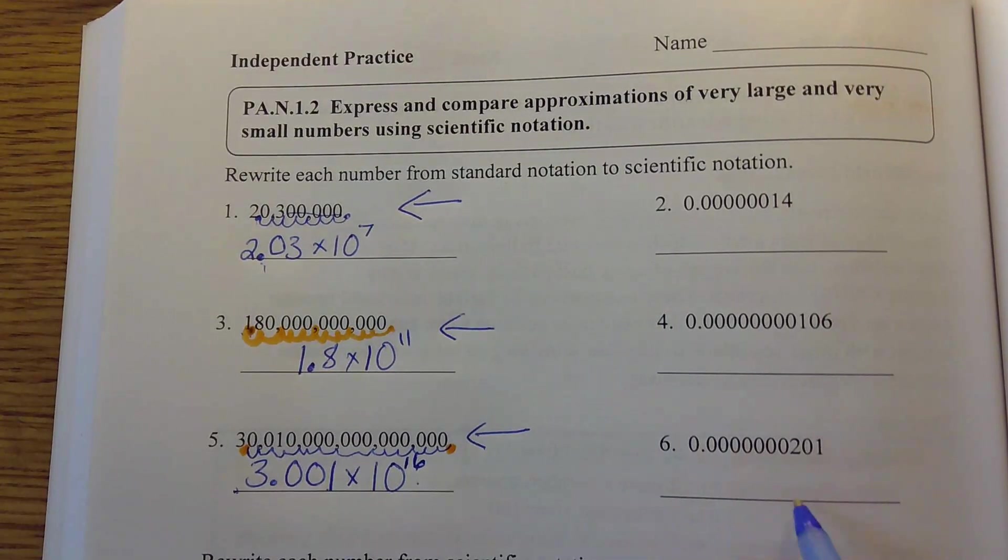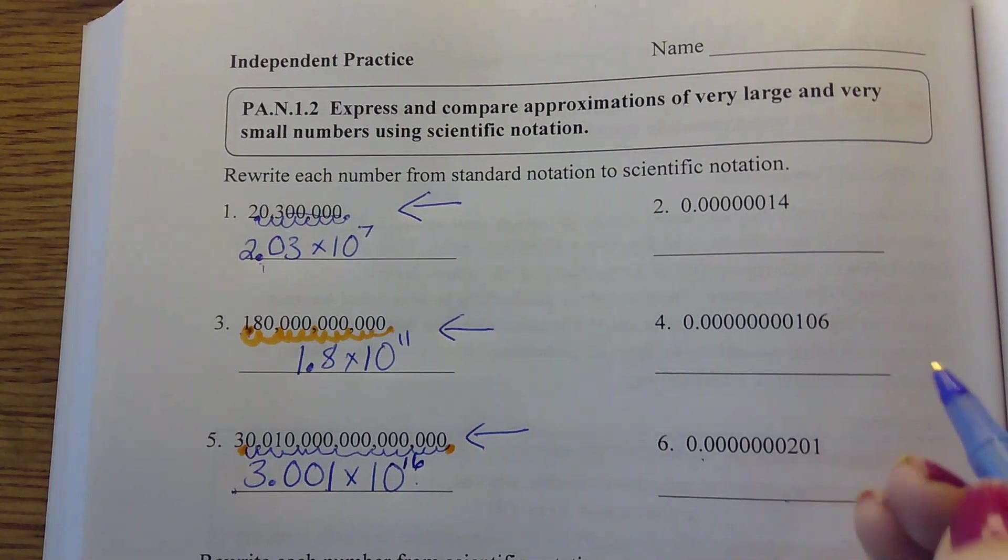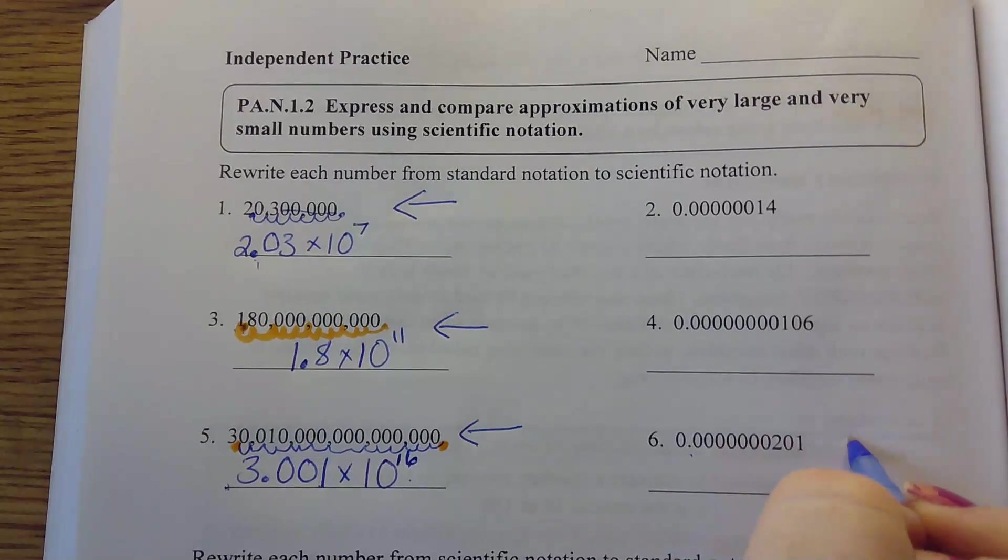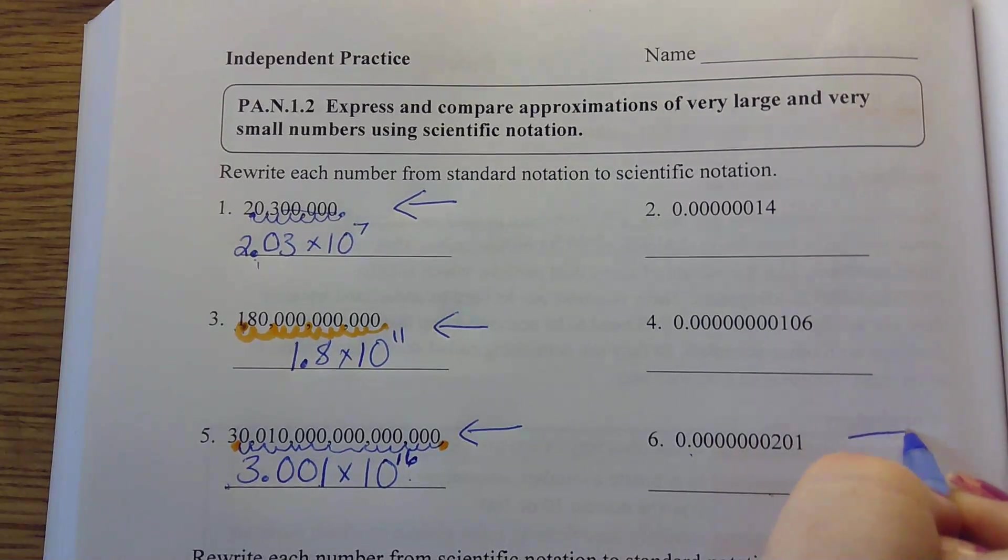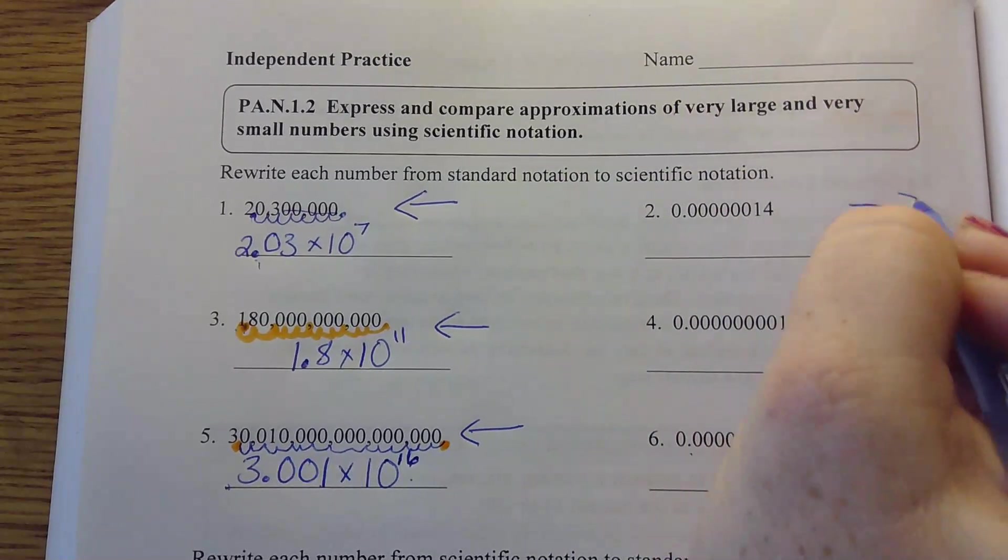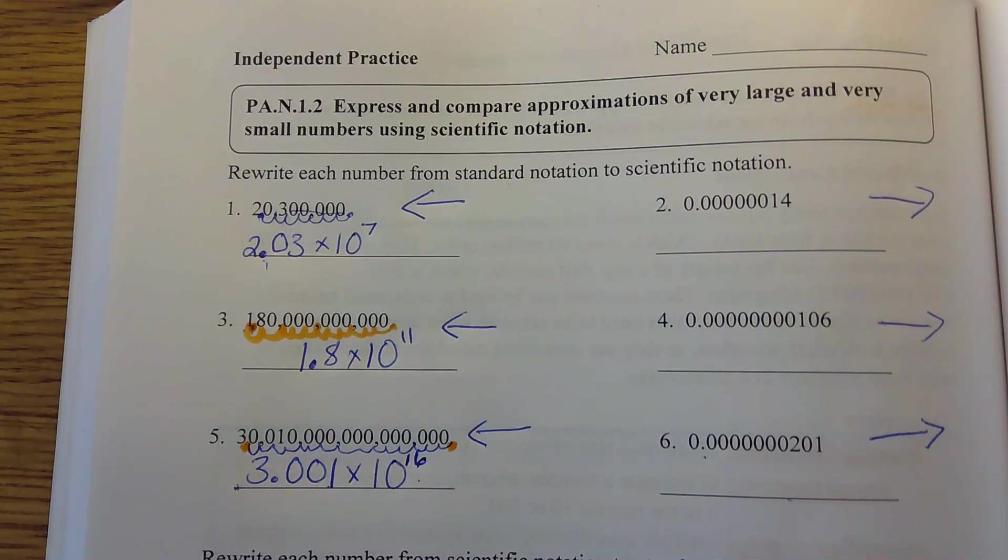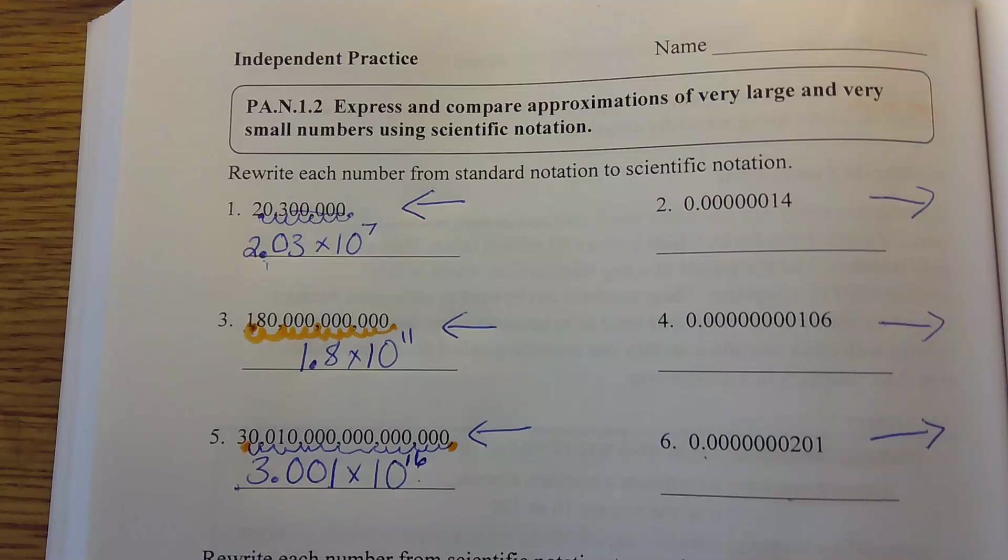Over here, I'm starting with decimal numbers. So instead of going to the left, I'm actually going to move them to the right. Because I'm moving them to the right, my exponent is going to be what? Negative. Negative. Good.